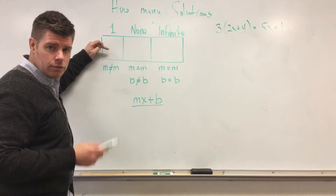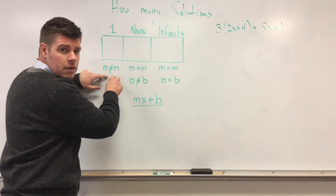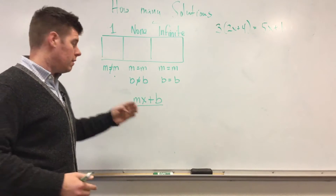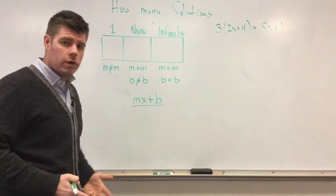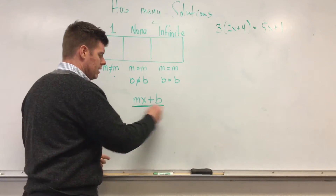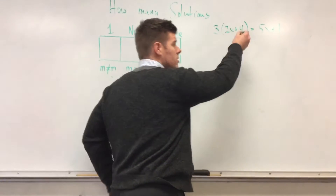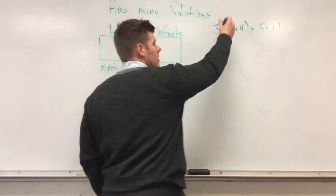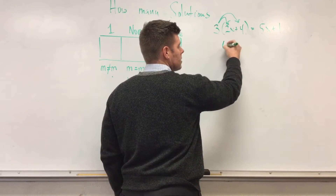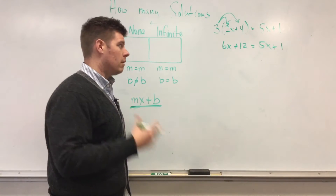Here's the key: if there's going to be one answer, when I get both sides reduced into mx + b form, the coefficient — the number of X's — will not be the same on both sides. If I have five X's on one side and eight on the other, there's one answer. So I apply the distributive property: 3 times 2x is 6x, 3 times 4 is 12, giving me 6x + 12 = 5x + 1.